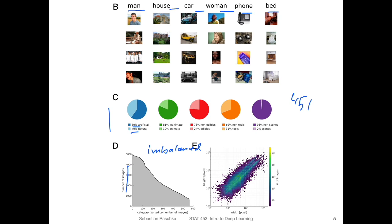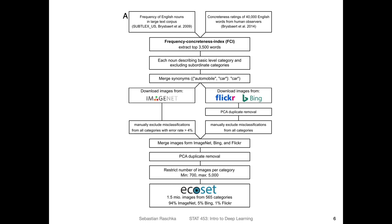Also note that these images have different aspect ratios and resolutions, as shown here. So if you work with this dataset, you also have to make sure you find a common denominator for the input sizes, especially if you work with certain architectures which are restricted to certain input sizes. But that being said, let's skip to the more interesting part — how they collected this dataset.